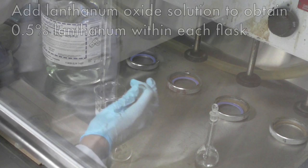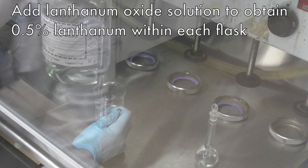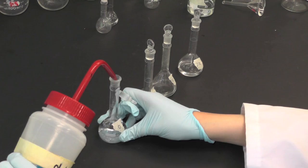Then, pipette the required amount of 2.5% lanthanum oxide solution to obtain 0.5% lanthanum oxide in the standards. Make up to volume with DD water and invert to mix.